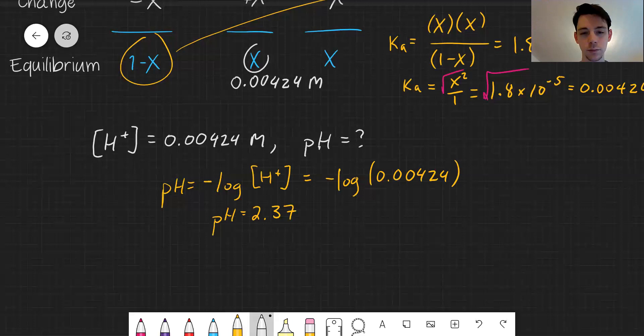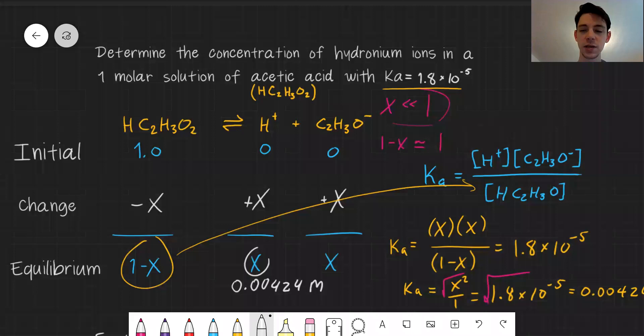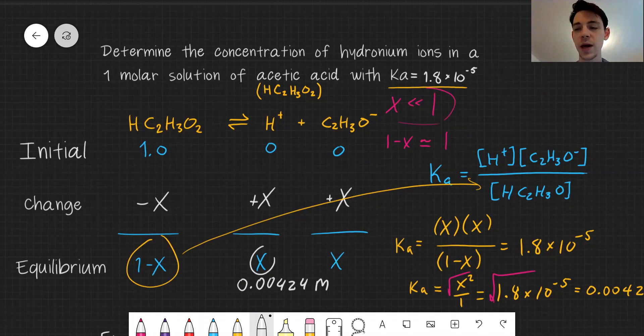That's pretty acidic. Remember anything less than seven is acidic. So hopefully this gives you an idea of how we could find the hydronium ion concentration of a weak acid.